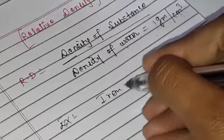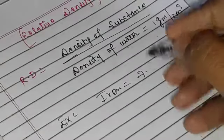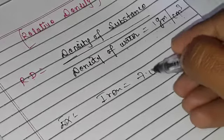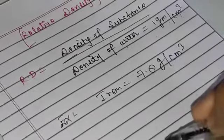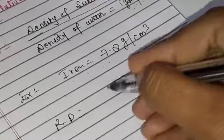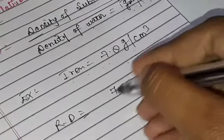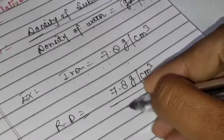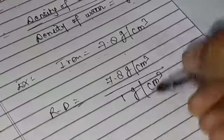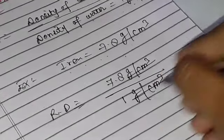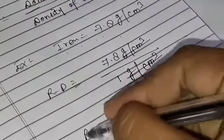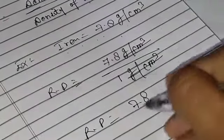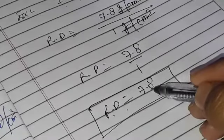For example, take iron. The density of iron is 7.8 gram per centimeter cube. So the relative density of iron equals 7.8 gram per centimeter cube divided by 1 gram per centimeter cube. The units cancel out, giving us 7.8 upon 1, which equals 7.8.